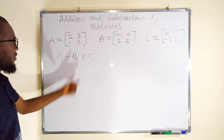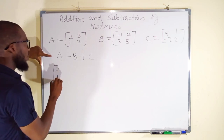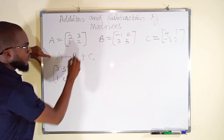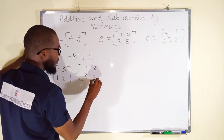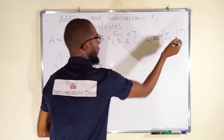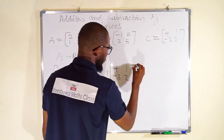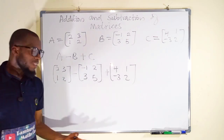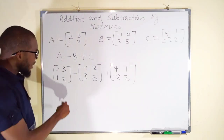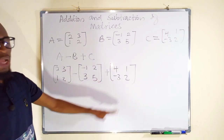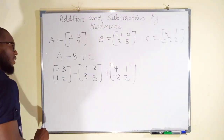We want to form a matrix of this expression. For A we have two, one, three, two. Minus sign, we have B: minus one, three, two, five. Then we add matrix C: four, negative three, one, and two. Now we can do it in different ways — we can add two matrices first then subtract, or subtract first then add. Or we can carry them all simultaneously, which I think is best.